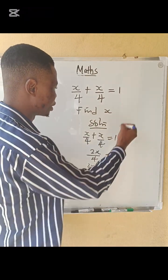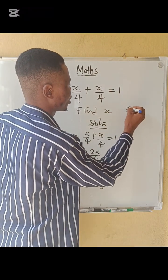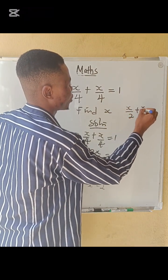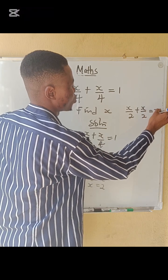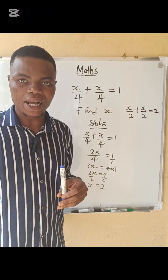If you understood this one, then solve this one. x over 2 plus x over 2 equals to 2. Drop your answer in the comment section. Bye-bye.